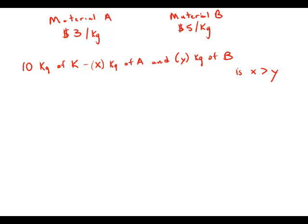Material A costs three dollars per kilogram and material B costs five dollars per kilogram. If 10 kilograms of material K consists of x kilograms of A and y kilograms of B, then is x greater than y? We know that x plus y equals 10 kilograms, and we want to know which one is bigger, x or y.